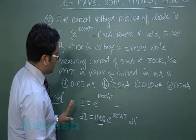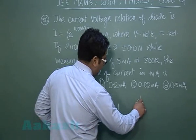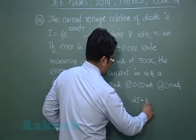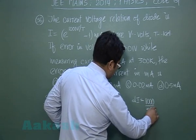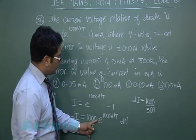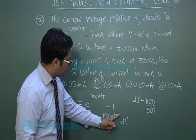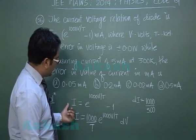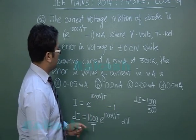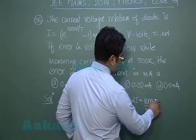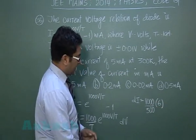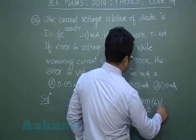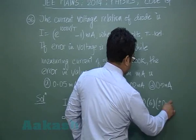Now substituting values: dI = (1000/300) × e^(1000V/T) × dV. For the exponential term, we note that I + 1 = e^(1000V/T), and since I = 5 mA, we get I + 1 = 6 mA. The value of dV is given as ±0.01 V.